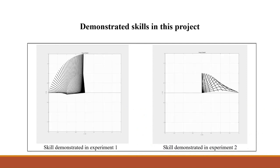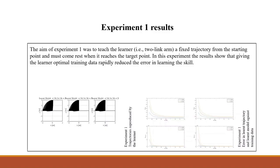The two skills which were taught in this project are using a two-link robot arm model designed in MATLAB. The first skill is to follow a fixed trajectory from a starting point to an end point. The aim of experiment one was to teach the learner a fixed trajectory from the starting point and must come to rest when it reaches the target point.